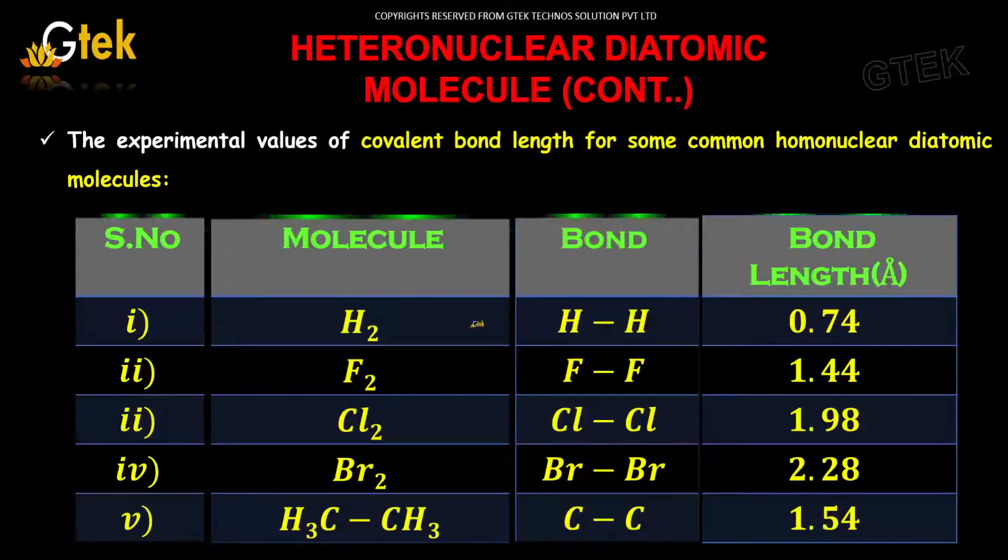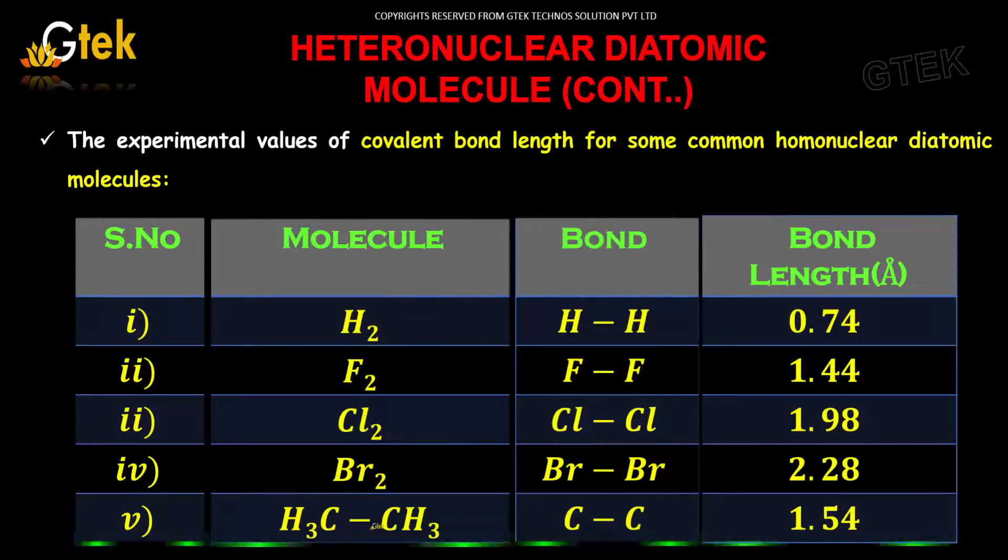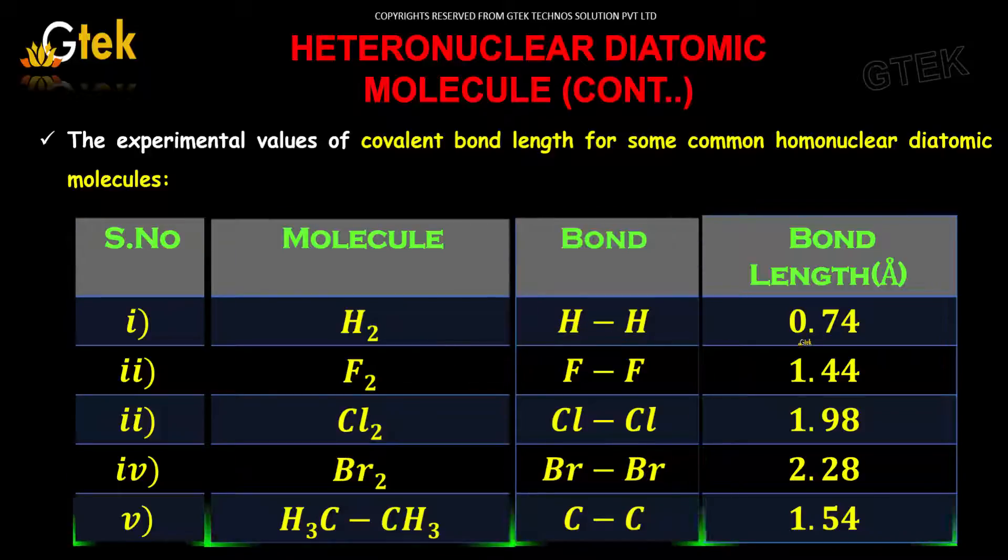Here are some of the values of heteronuclear and homonuclear molecules. First, the homonuclear ones: H2 (hydrogen-hydrogen) is 0.74, fluorine is 1.44, chlorine is 1.98, bromine is 2.28. For methane, it is ethane: CH3-CH3, you have 1.54.